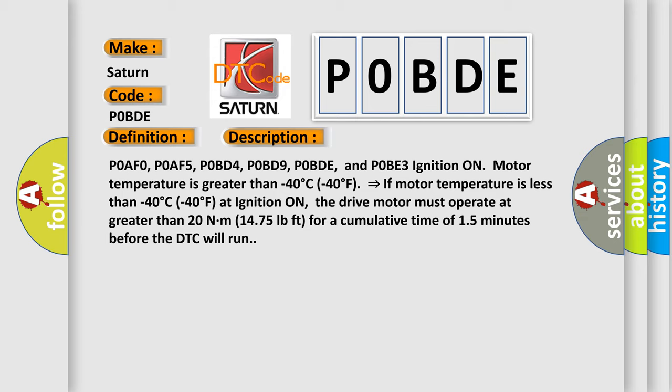If motor temperature is less than minus 40 degrees Celsius at ignition on, the drive motor must operate at greater than 20 Nm (14.75 pound-feet) for a cumulative time of 15 minutes before the DTC will run.